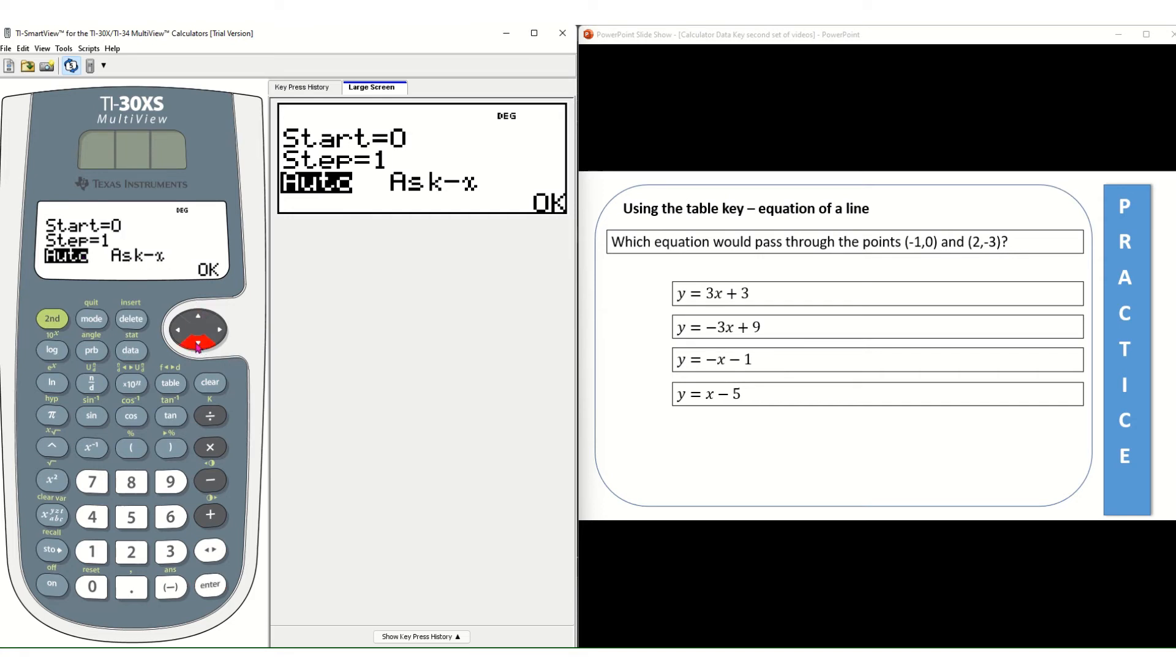So I'm going to use my arrow key to get down there or I could press enter until my cursor is there. And once my cursor is over ask x I'm going to press enter. I'll press enter again to get to the ok.